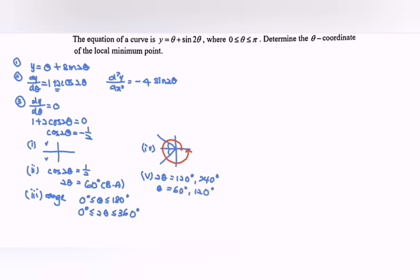We can rewrite the solution in radian form. So θ equals π over 3 radian and 2π over 3 radian. Those are the critical numbers.